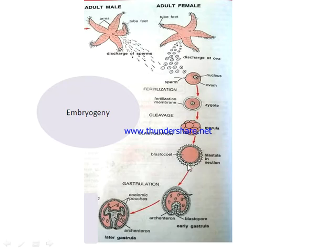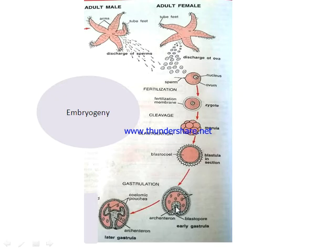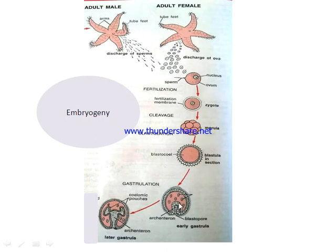This blastula then undergoes gastrulation. How is the gastrula formed? It first of all undergoes invagination. As you can see here, this is the early gastrula — the single layer around the blastocoel, at one point it will start invaginating, resulting in the formation of another cavity. This cavity is called the archenteron, and the opening through which the cavity communicates to the outside is called the blastopore. This early gastrula becomes a cup-shaped, double-layered structure. The outer layer is called the ectoderm while the inner layer is called the endoderm.